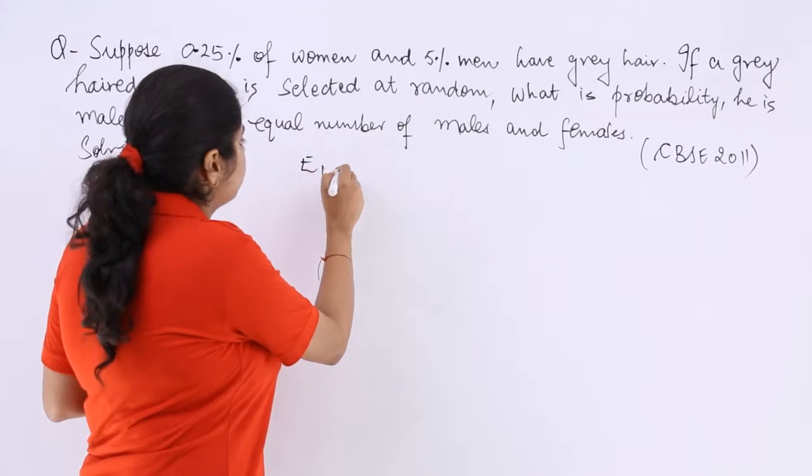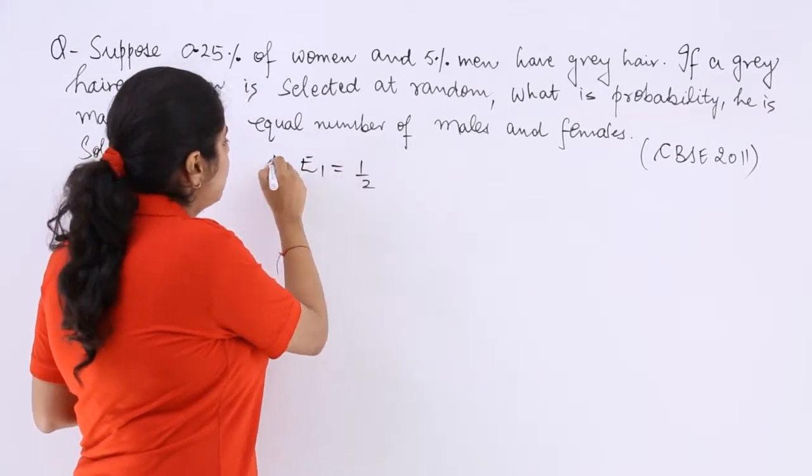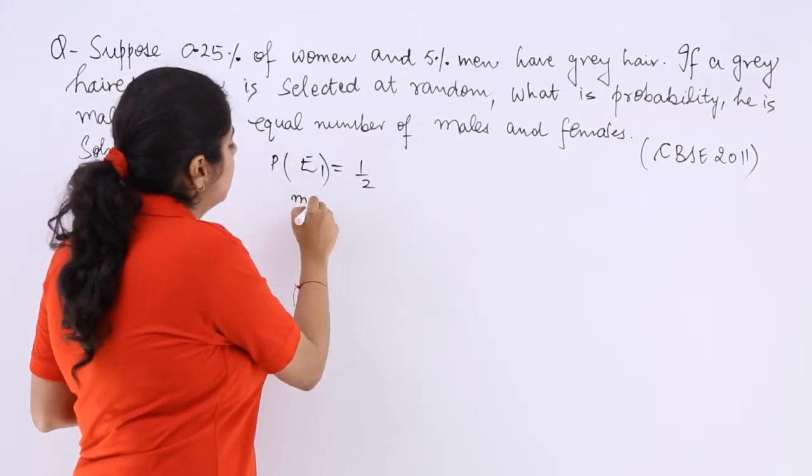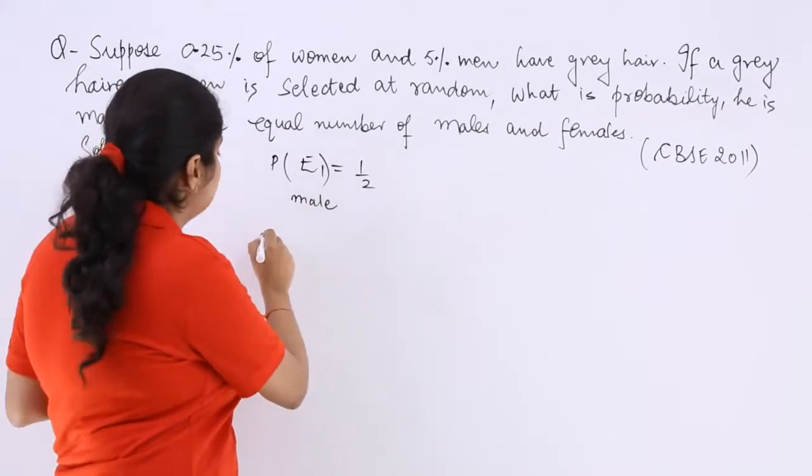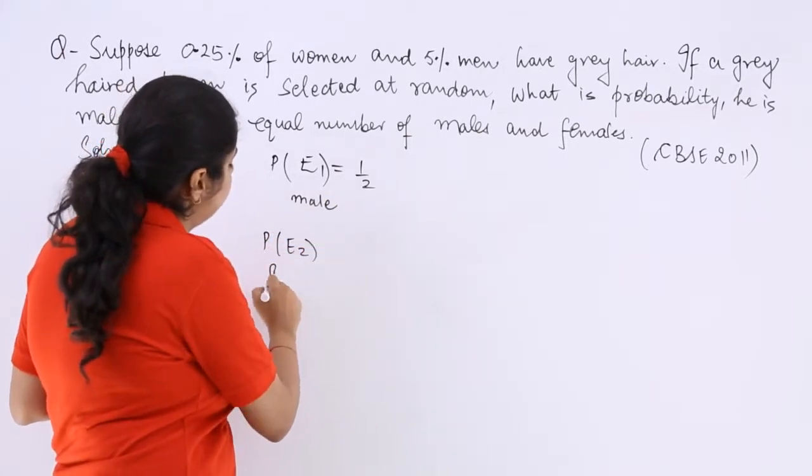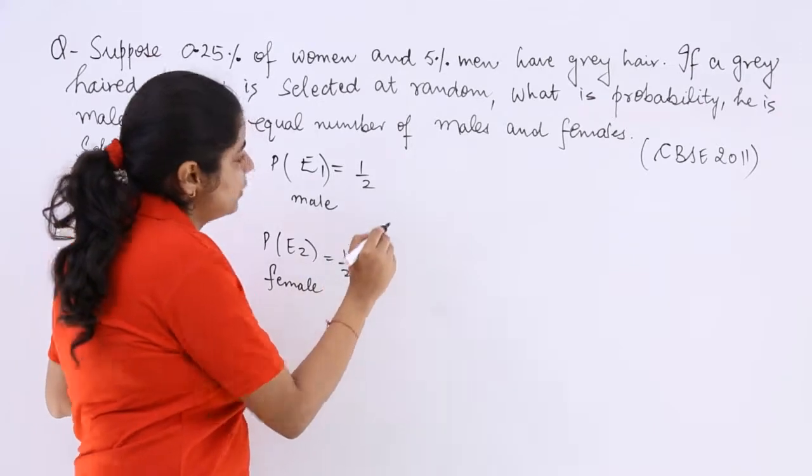So I say E1 is having a male. So probability of being a male. Similarly, probability of being a female is also 1 by 2.